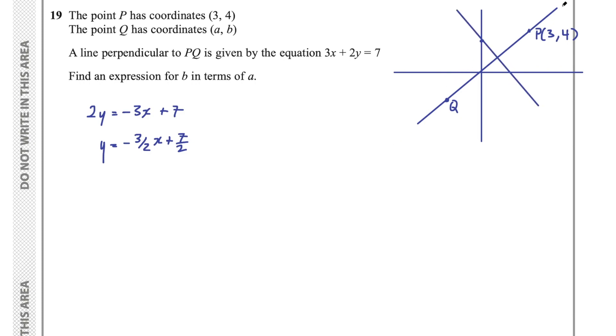Anyways, it has to be perpendicular to PQ. So now we have our diagram, we have this line PQ, and we have a line perpendicular to it. We know the gradient of this line. It's in this equation, negative 3 on 2 is the gradient. And they are perpendicular, so that tells us the gradient of PQ.